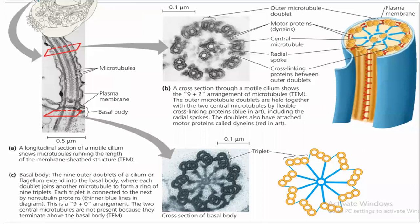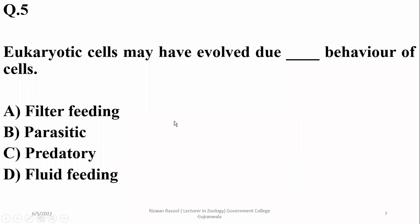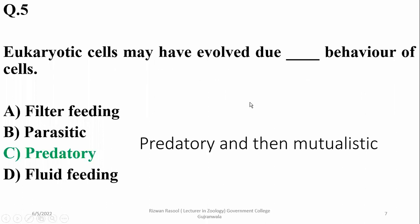Triplet microtubules are found in centrioles in eukaryotic cells. Question 5: Eukaryotic cells may have evolved due to which kind of behavior of cells? The evolution of eukaryotes is explained by the endosymbiotic theory, in which serial endosymbiosis developed. Right option is C.